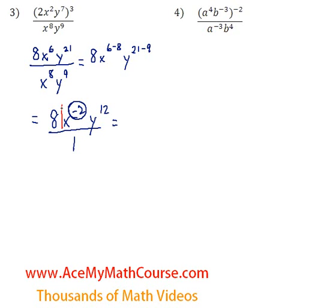So what I'll do is that I will send the x to the power of negative 2 down to the bottom, thereby making the exponent positive. We can always do that. So we have 1 times x squared, and I'll just rewrite everything as 8y to the power of 12 over x squared.